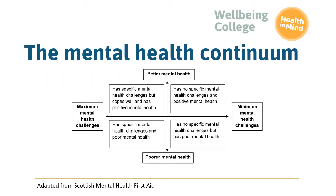Many people consider mental health as a scale, with good mental health on one end and bad mental health on the other, directly linked to whether someone has a specific mental health challenge. This diagram shows the idea of a mental health continuum, linking overall mental health and wellbeing to the individual's experience of their mental health challenge. Starting bottom left of this diagram, we can see that on one hand someone may have a specific mental health challenge and poor mental health, yet on the other, someone may cope well despite mental health challenges and experience positive mental health overall. The opposite is also true — it is possible for someone with no identifiable mental health challenge to experience poorer or better mental health. That's because the factors influencing mental wellbeing will affect all of us to a greater or lesser extent at different times in our lives.